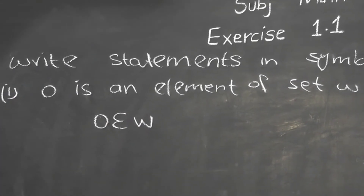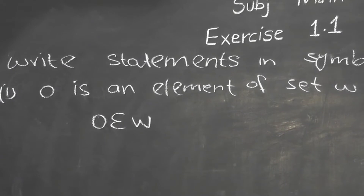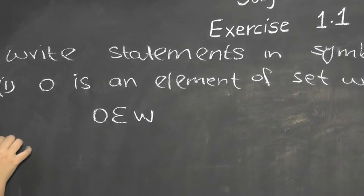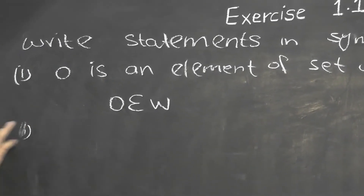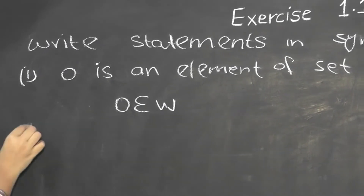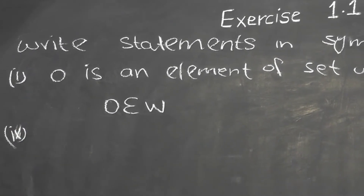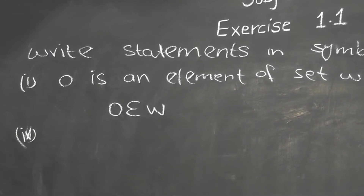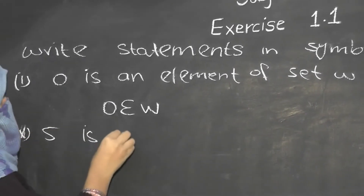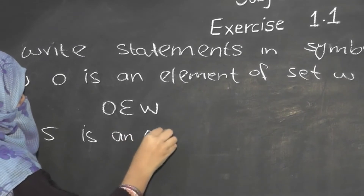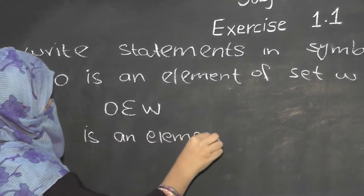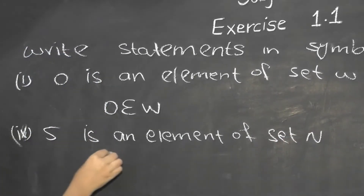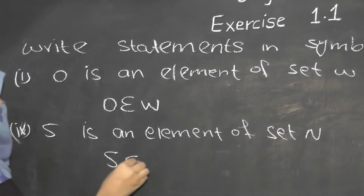Now let's do the next part of this question. Part number 9: '5 is an element of the set N.' So, how do you write it? You write: 5 belongs to N.